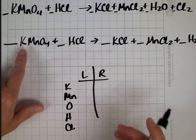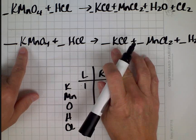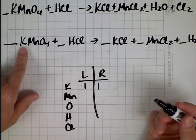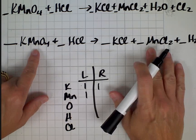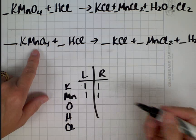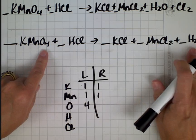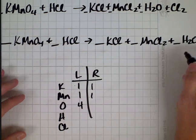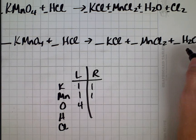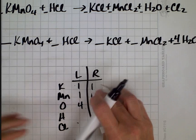How much potassium on the left? One. And on the right? One. So far, so good. Manganese on the left? One. Manganese on the right? One. Still in good shape. Oxygen on the left? Four. Oxygen on the right? Let me move this over a little so you can see it. I only have one oxygen, so in order to make that four oxygens, I need to put a little four here. And any time I change something, I always go back and I start all over again.